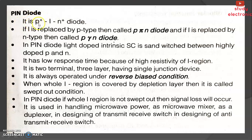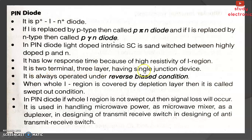PIN diode is a P+ I N+ diode. If I is replaced by P-type, it is called a P-Pi-N diode. If I is replaced by N-type, it is called a P-Gamma-N diode. In a PIN diode, lightly doped intrinsic semiconductor is sandwiched between highly doped P and N regions. It has no response time because of the high resistivity of the I region. It is a two-terminal, three-layer, single-junction diode.